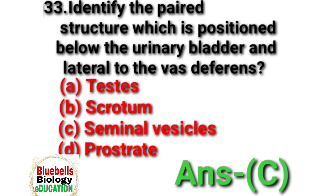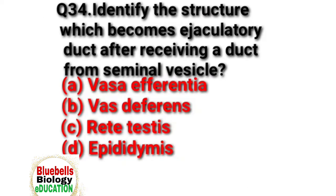Answer is C. Question 34. Identify the structure which becomes the ejaculatory duct after receiving a duct from the seminal vesicle. Options: